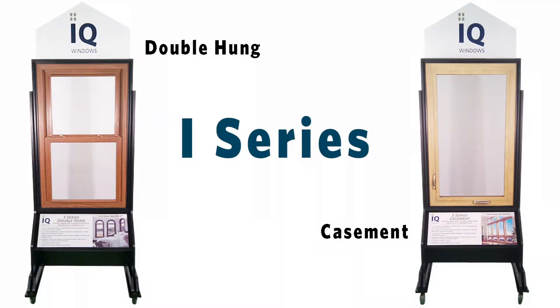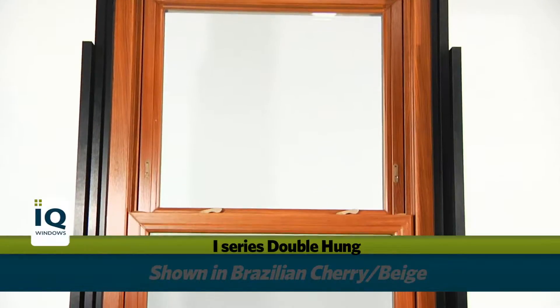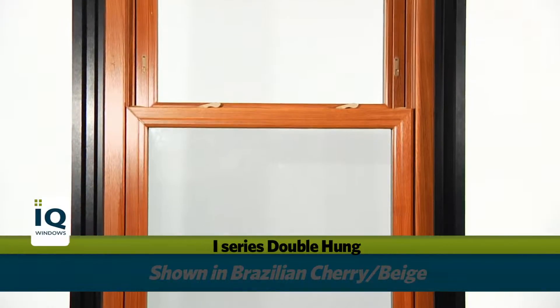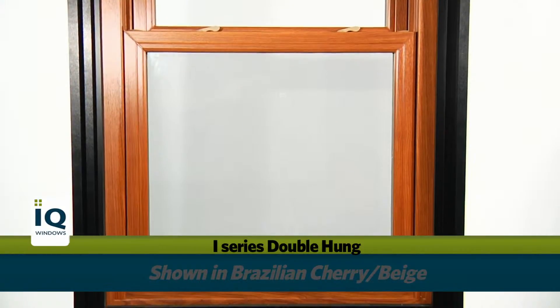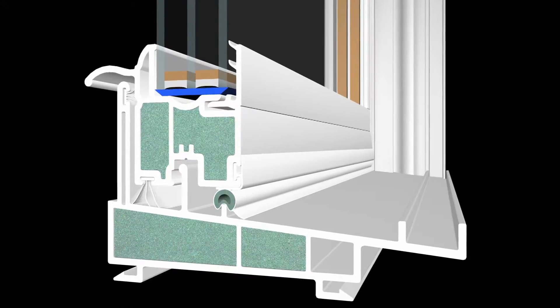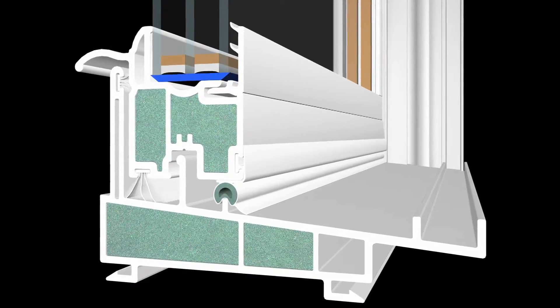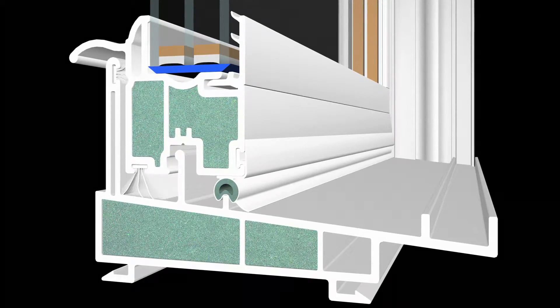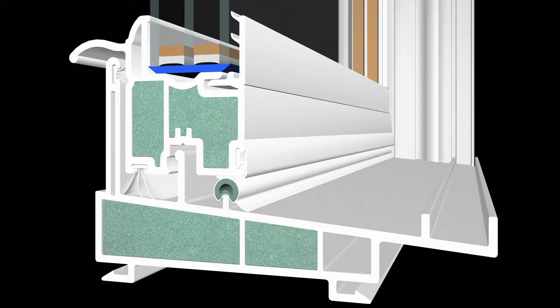The beauty of the i-Series from IQ Windows goes well beyond its detailed architectural lines and beautiful looks. Inside the i-Series lies an engineering masterpiece. The master frame and sash contain comfort foam, an injected green R5 expanding polyurethane foam that further improves the thermal efficiency of the window.